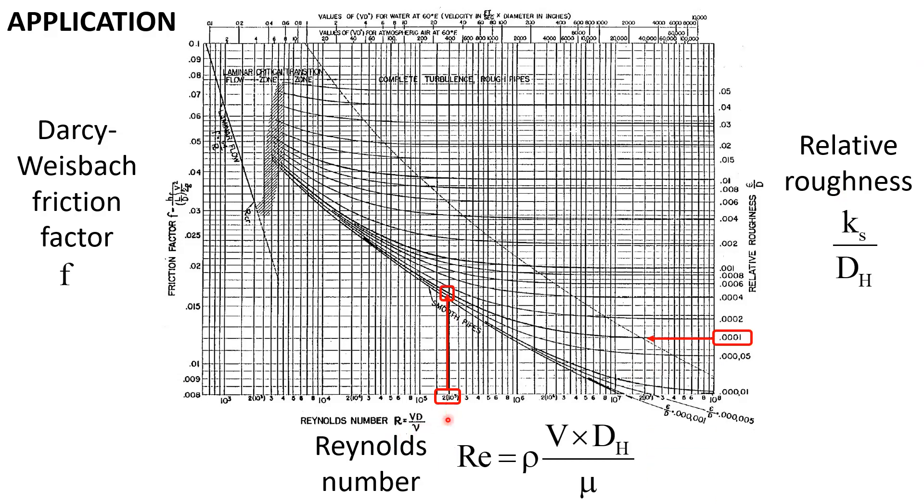Then, following the line of constant relative roughness height, we look at the intersection with the vertical line corresponding to the Reynolds number to find the corresponding Darcy friction factor. That is the typical approach for turbulent flow.